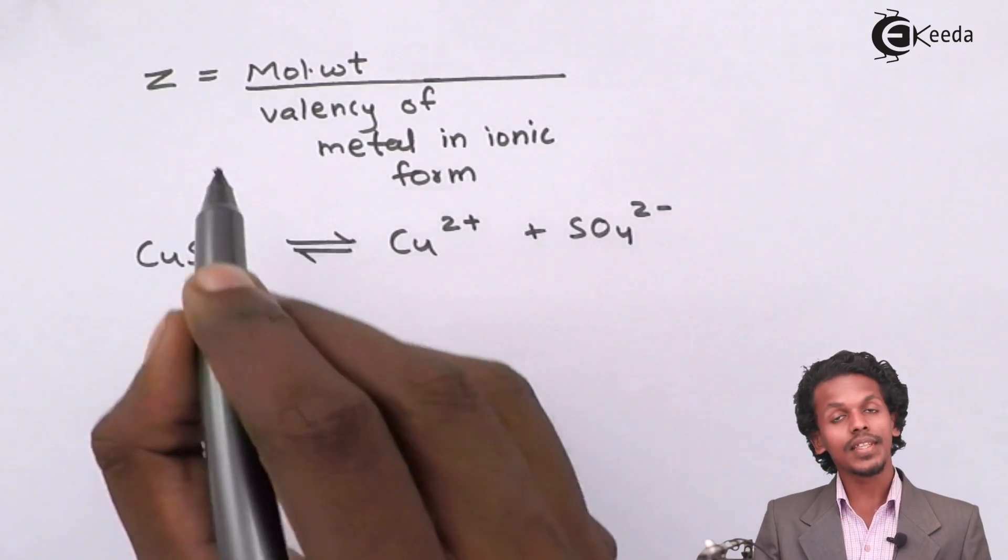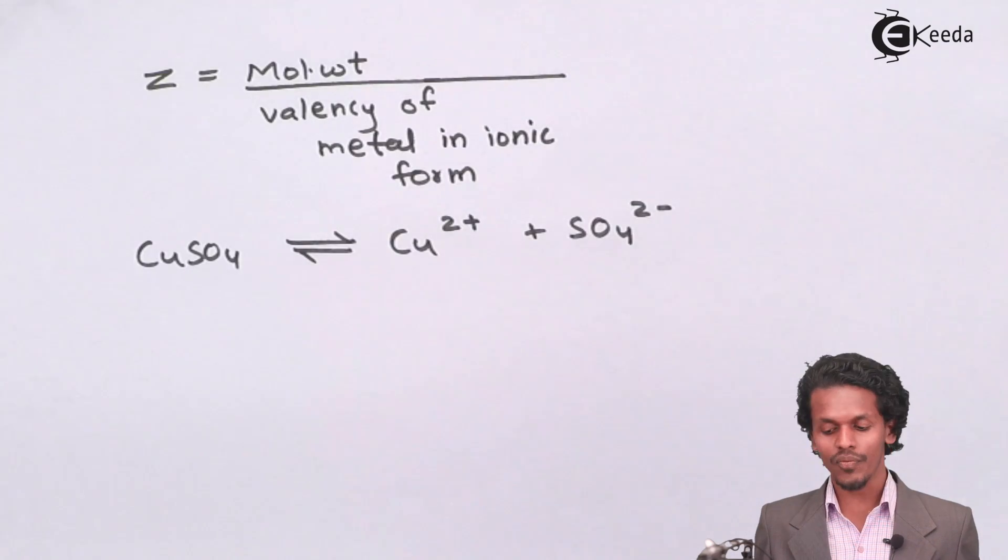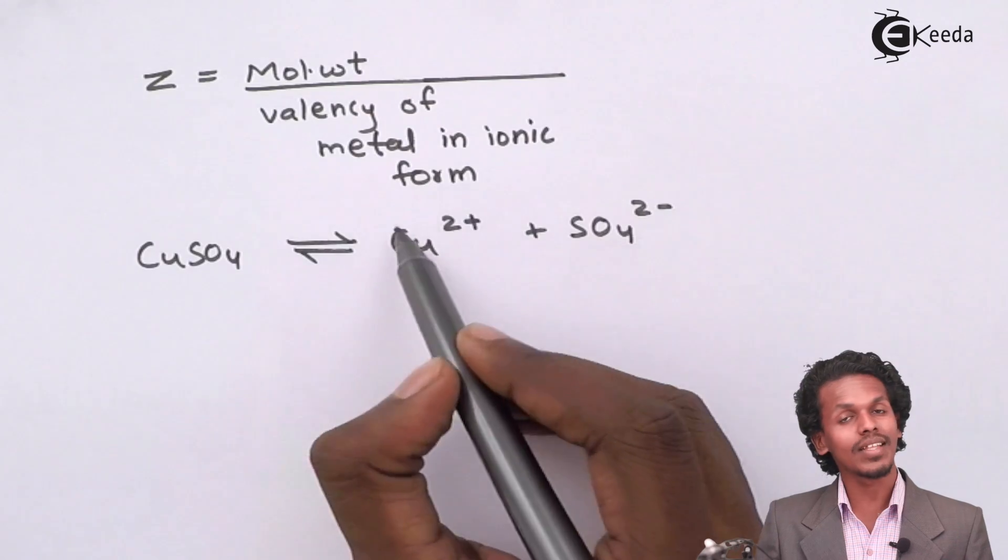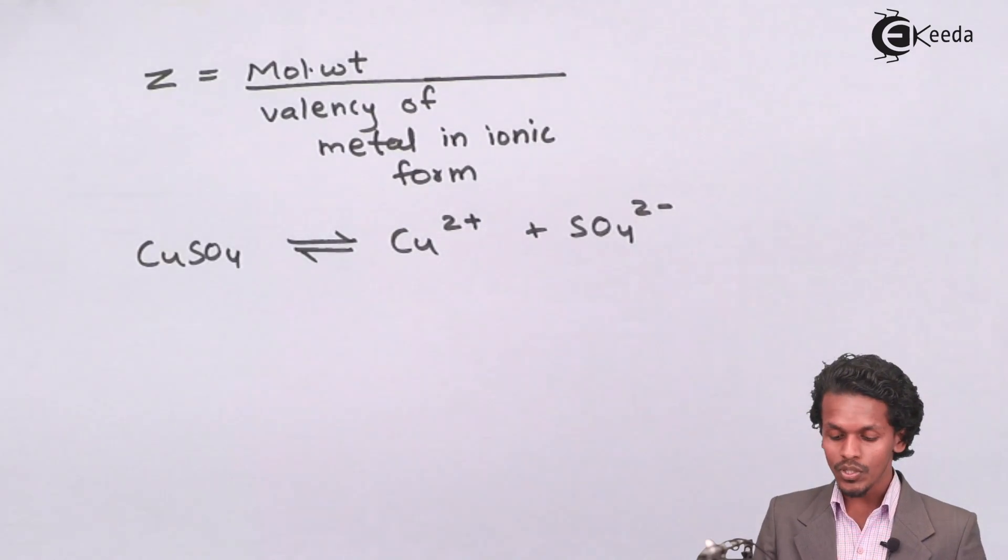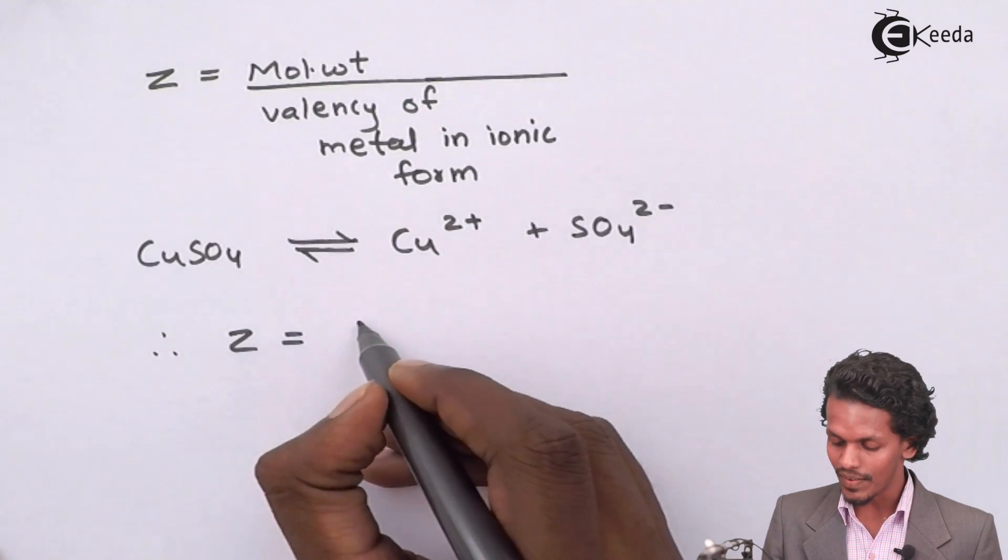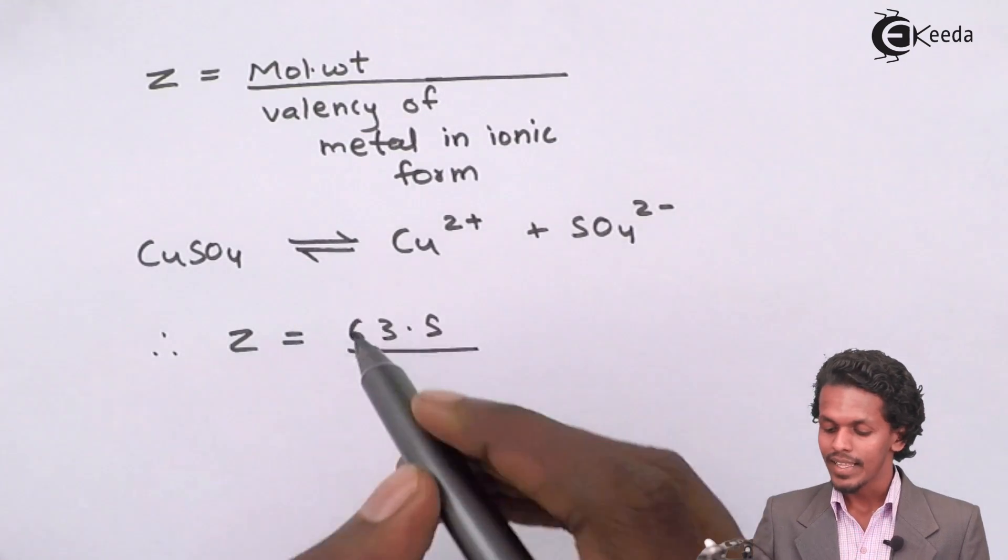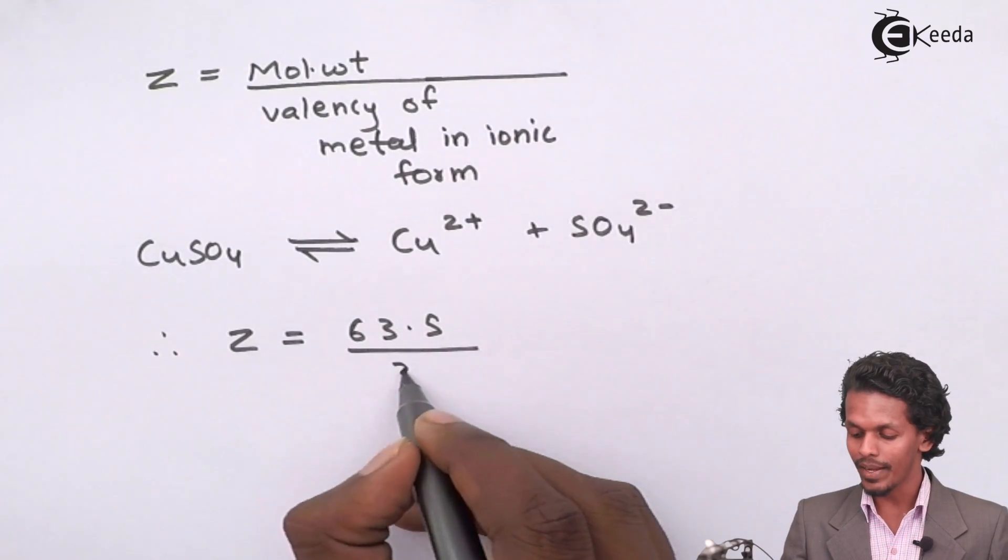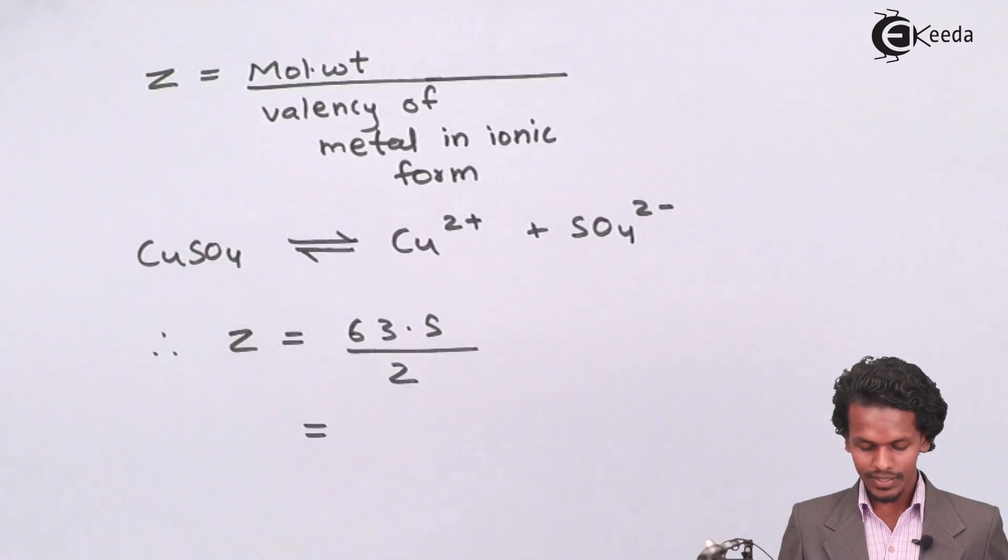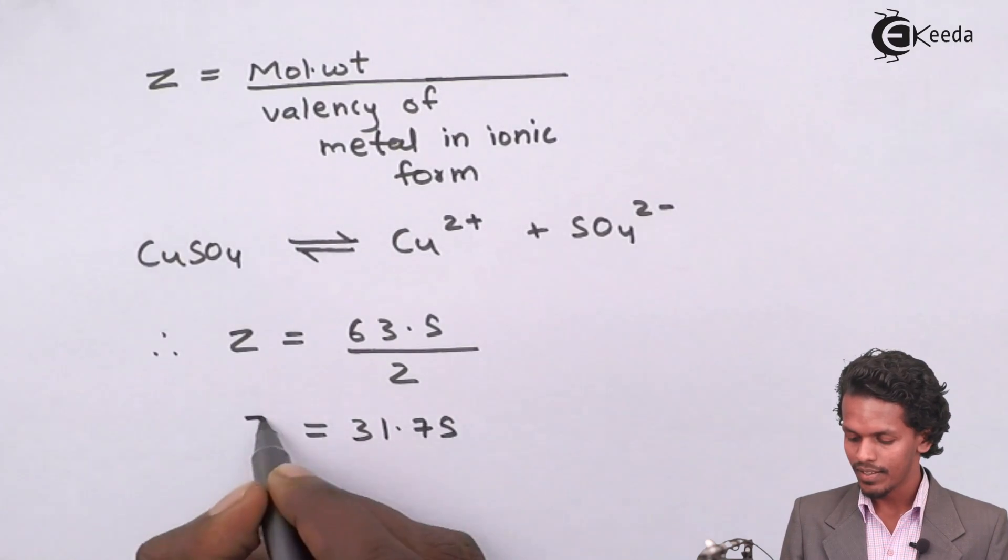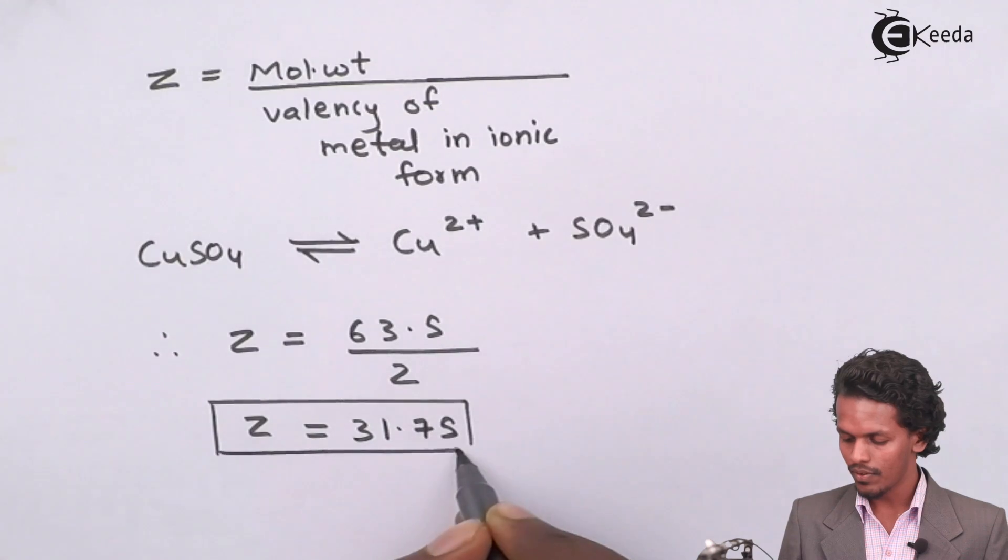The molecular weight given to us is 63.5, but the valency of the metal in ionic form here you can see is 2. With this we can estimate the value of Z, the equivalent weight. Therefore Z equals 63.5 divided by 2, which equals 31.75.